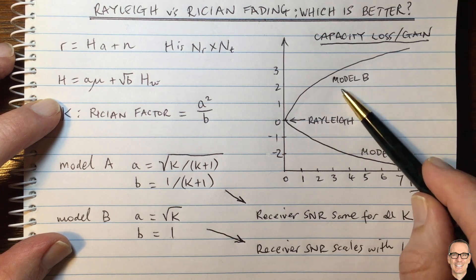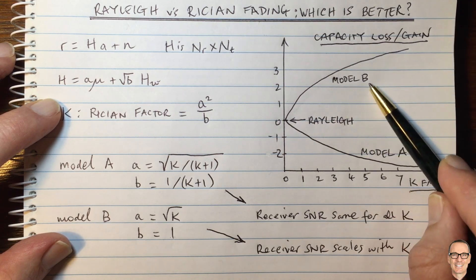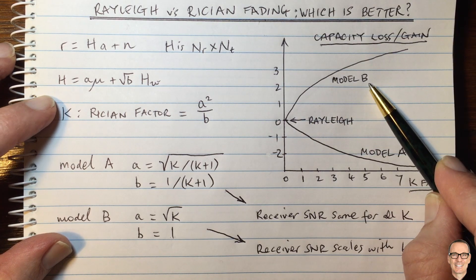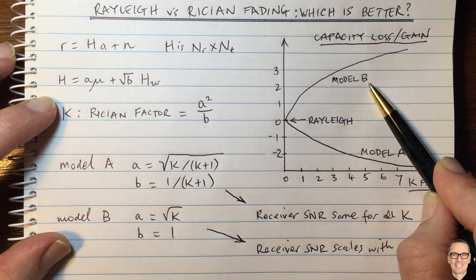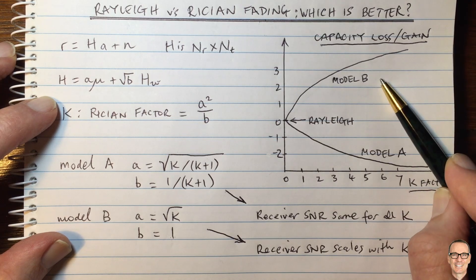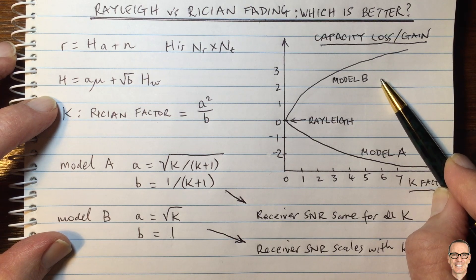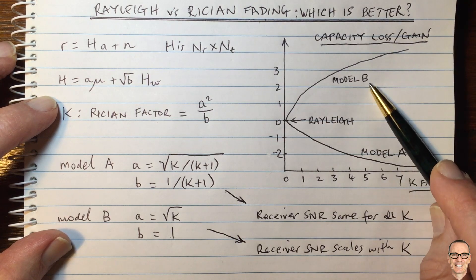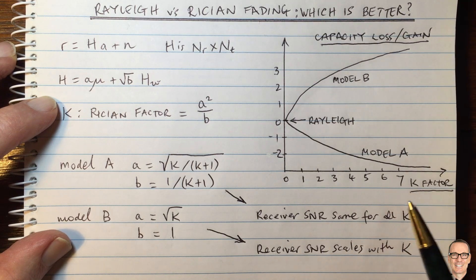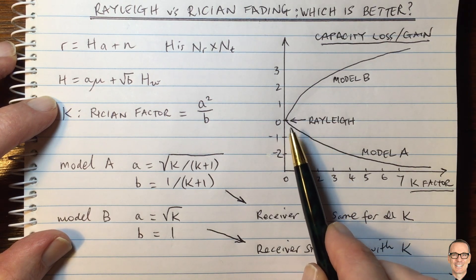So in general, in reality, it's going to be model B that you're looking at. And you never want to have a scenario in practice where you deliberately block the line of sight, because that will not increase the actual energy in the reflective paths. It might make them greater in relative to the direct line of sight.